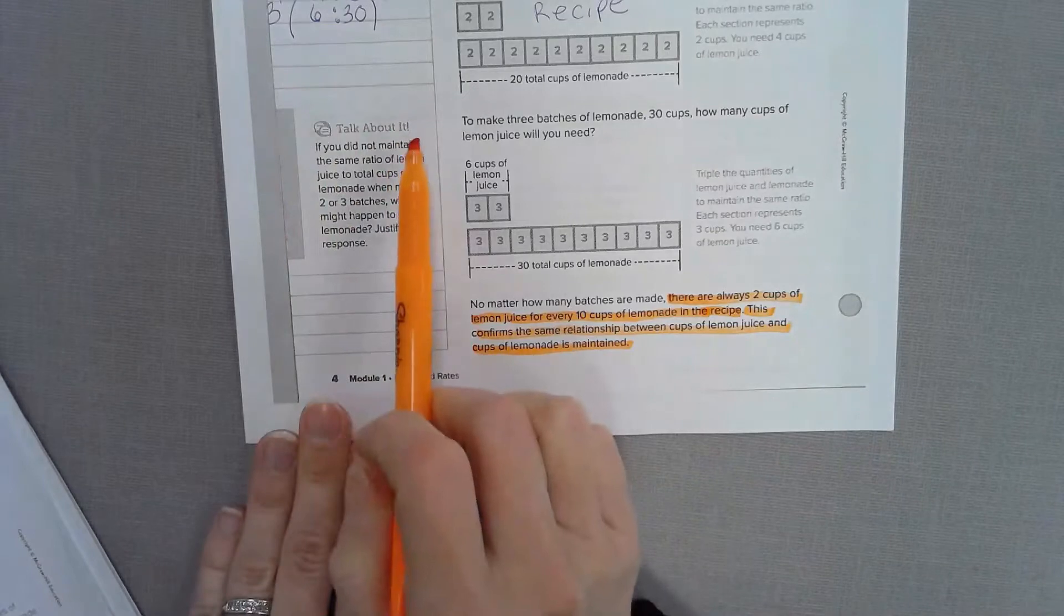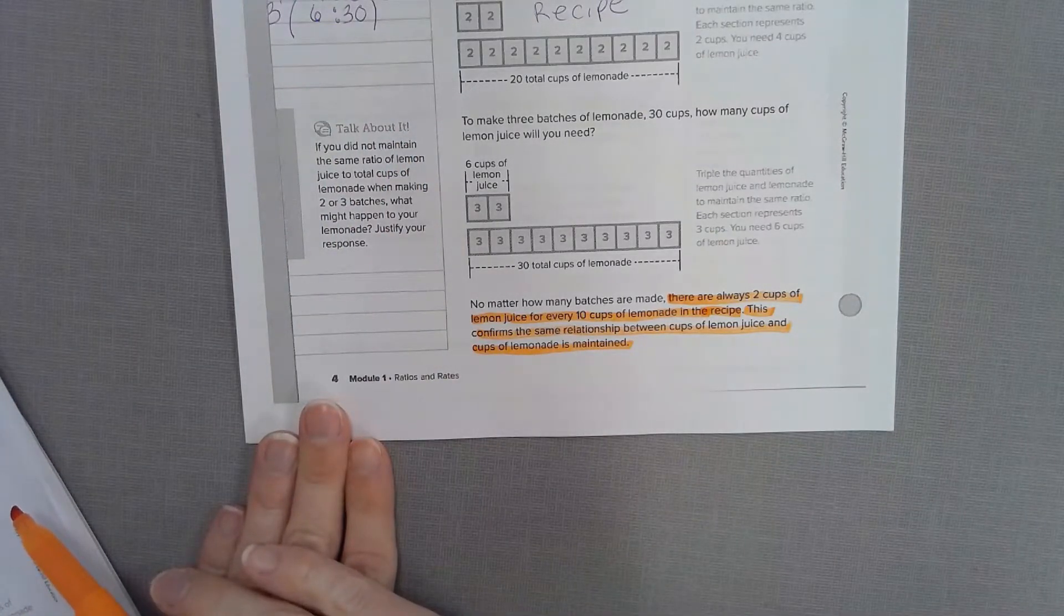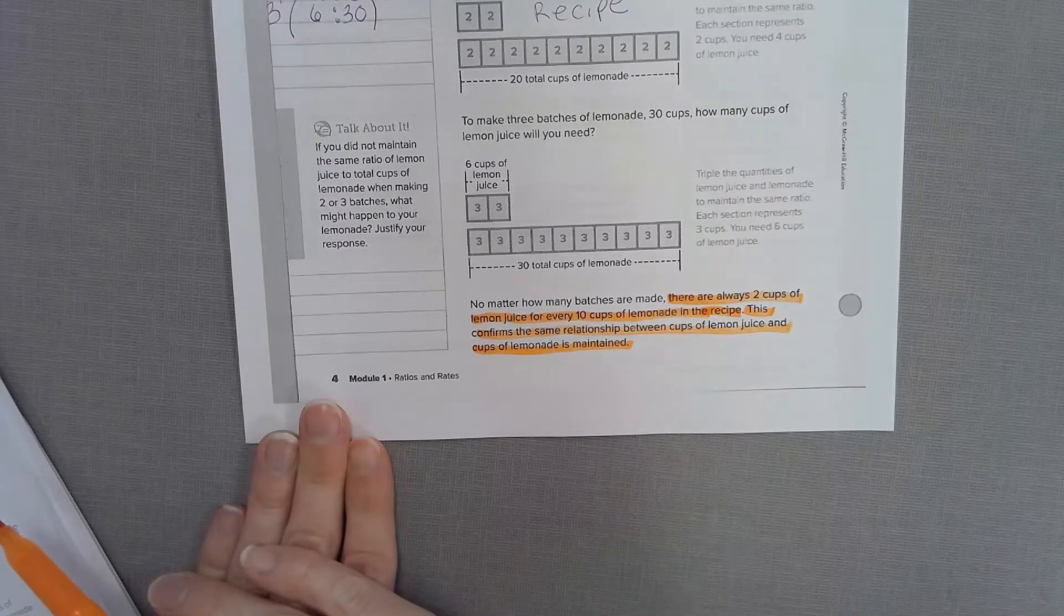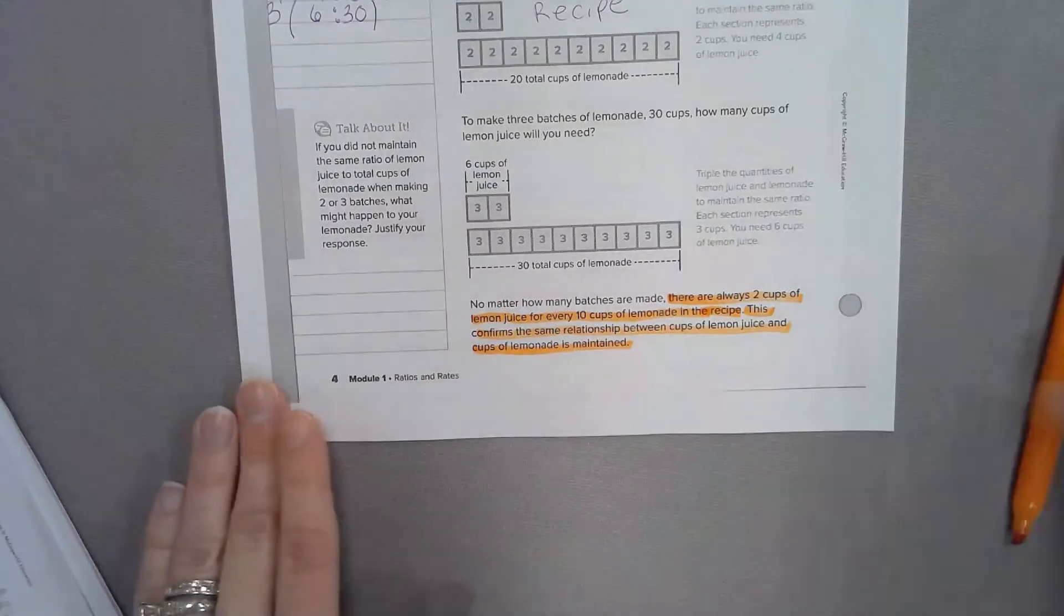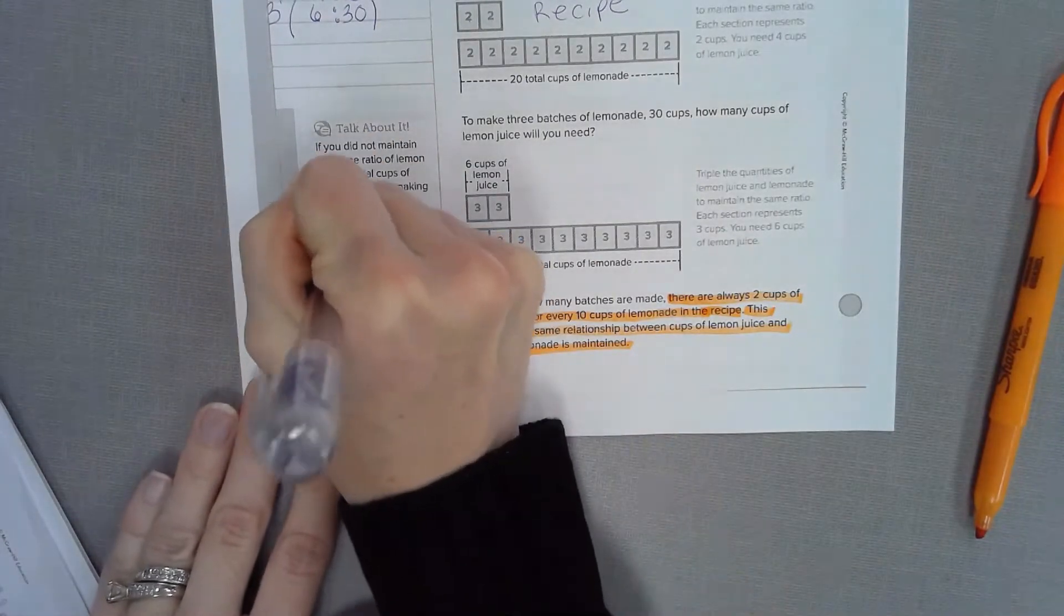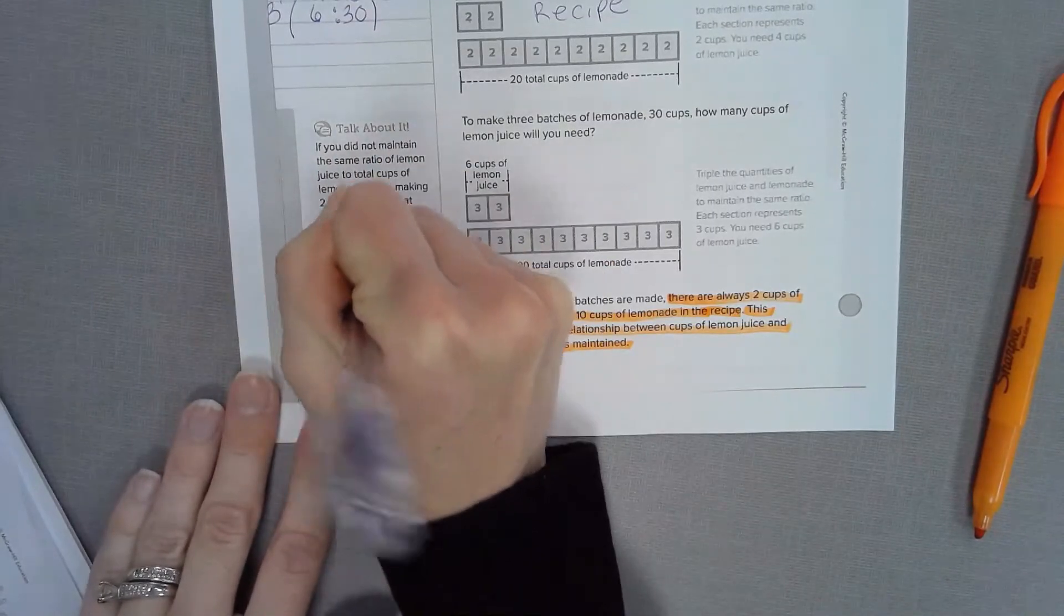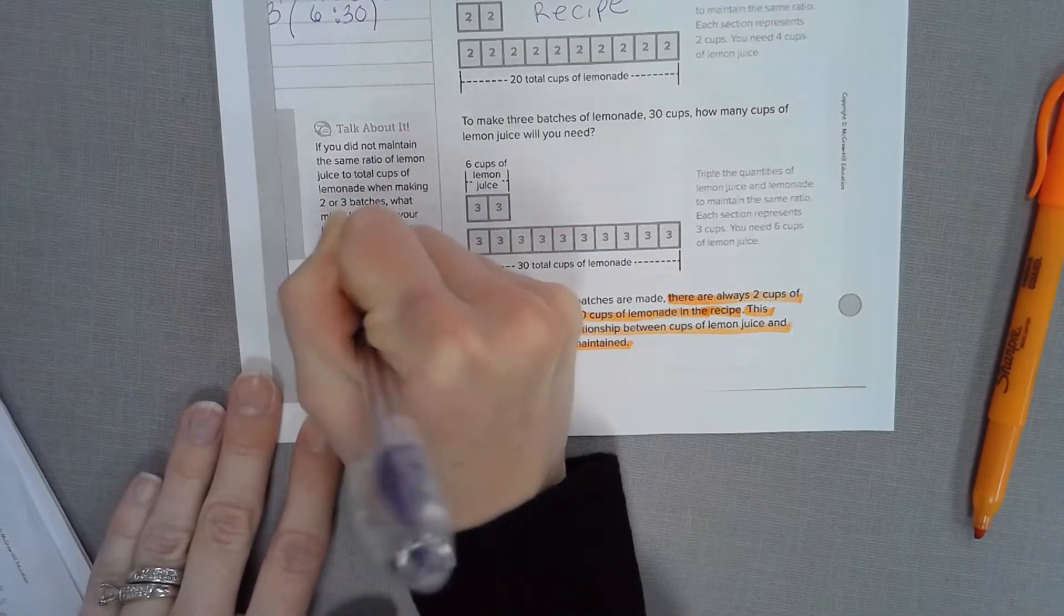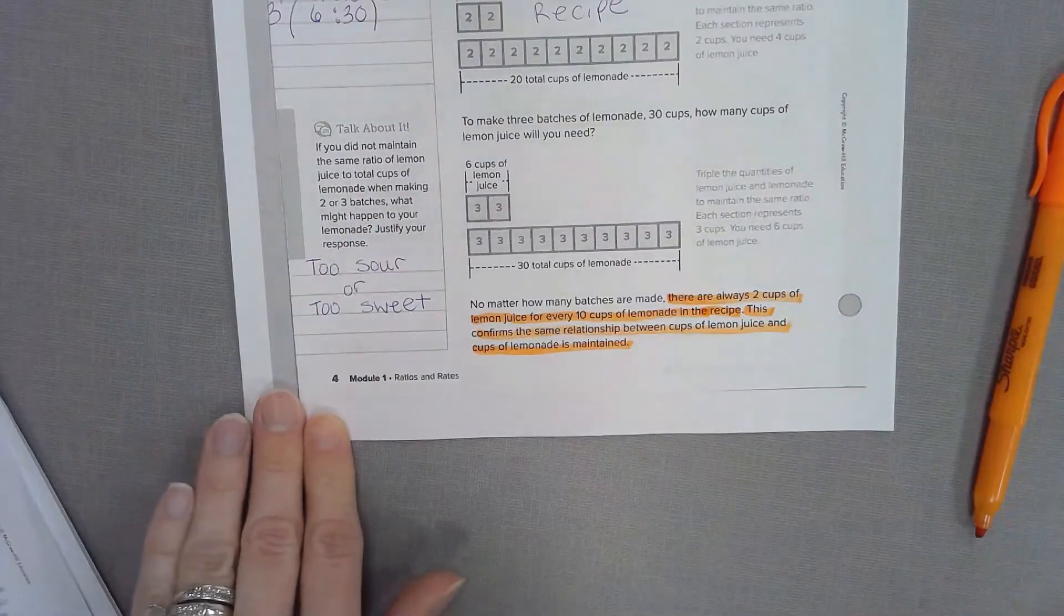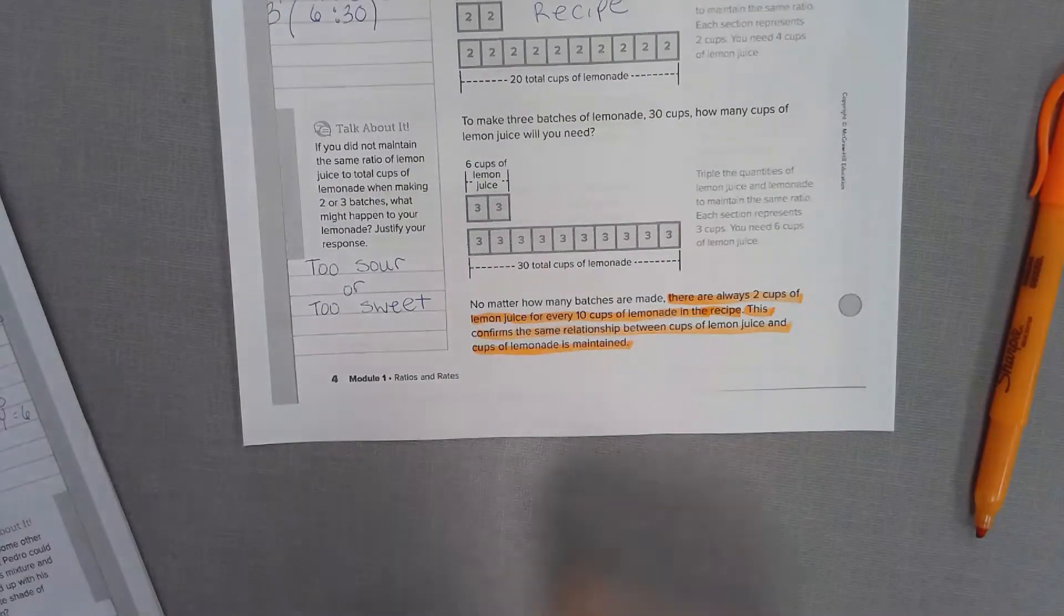Let's go over here to the talk about it. It says if you did not maintain the same ratio of lemon juice to the total cups of lemonade, what might happen to your lemonade? Well, it could become too sour, or it could become too sweet.